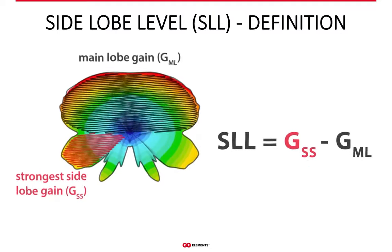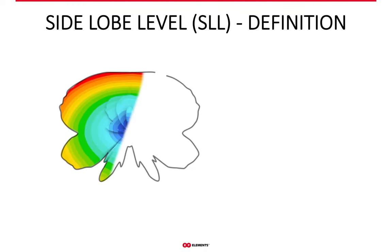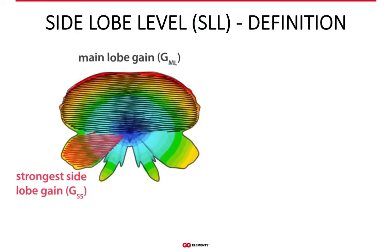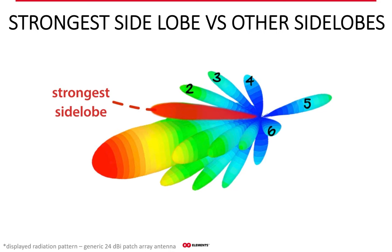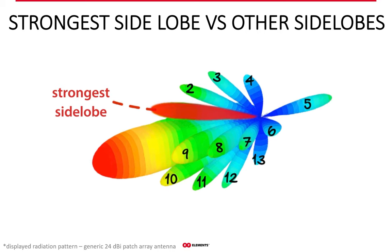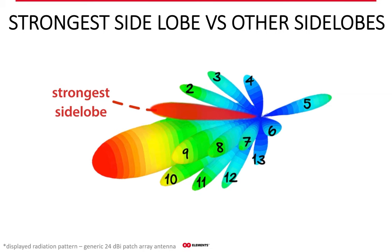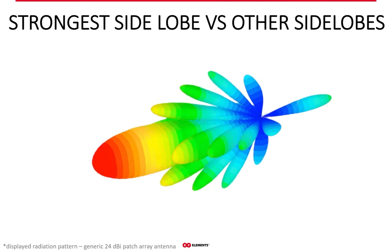If side lobe level is high, the strongest side lobe is close to having the gain of the main lobe, making it a very poor antenna for WISP networks. The issue with side lobe level is that it does not address all the side lobes an antenna has. Side lobe level is defined by the strongest side lobe — which is only one side lobe out of many — and defined at a single frequency as well. Since side lobes change with frequency, the noise level also changes with them. Despite knowing what the strongest side lobe is at a single frequency, simply switching the channel changes everything.